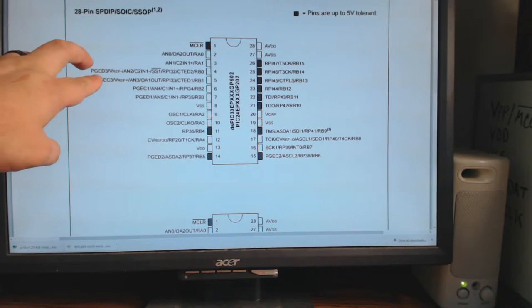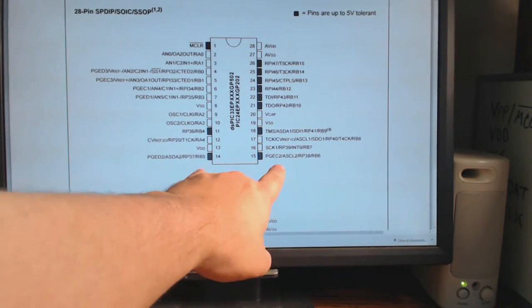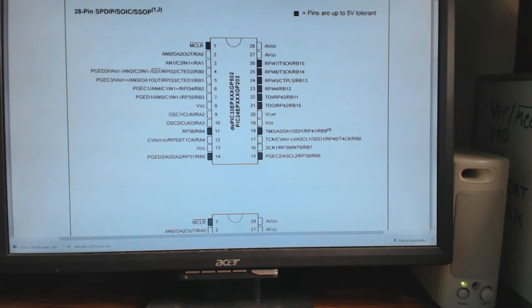The PGEC and PGED pins are kind of hard to find. There's a pair of them right here, these are number one. There's a pair of them right here, these are number three. And there's a pair of them down here, these are number two. I think for today's purposes I'm going to use number one.